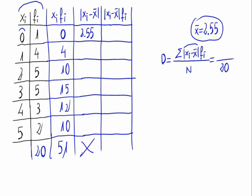2 minus 2.55 in absolute value is 0.55. 3 minus 2.55 is 0.45. For the next values, it is 1.45 and 2.45.